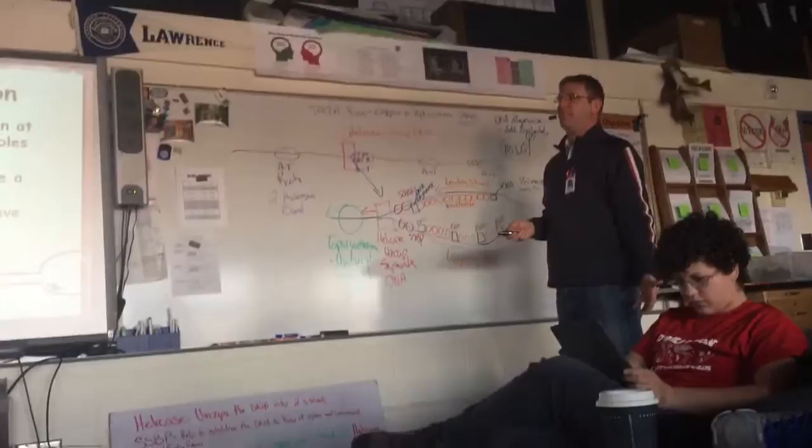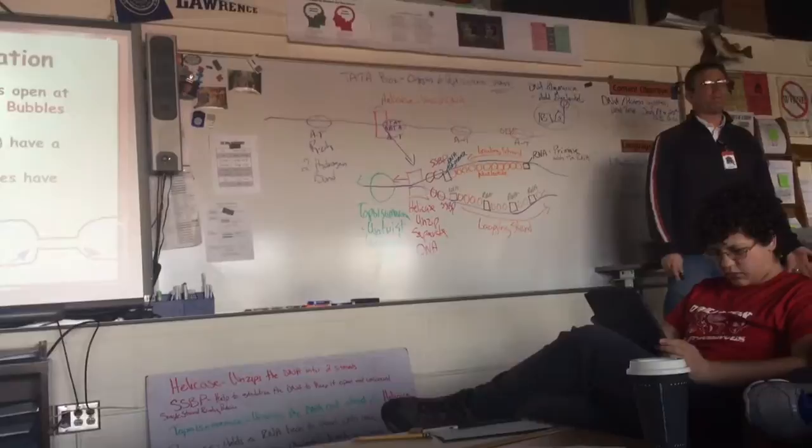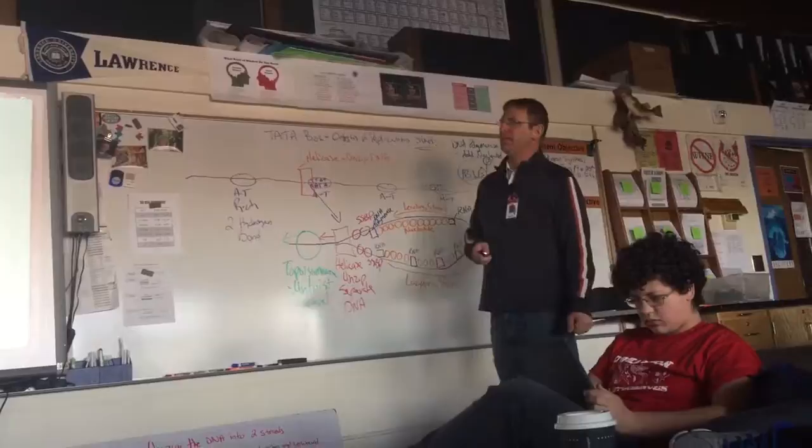Eukaryotic chromosomes have many replication bubbles. The prokaryotic chromosome only has one bubble, because it's circular, it's much smaller DNA, and prokaryotic cells only need one replication bubble.